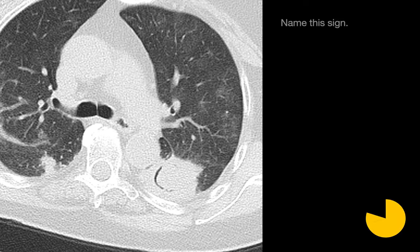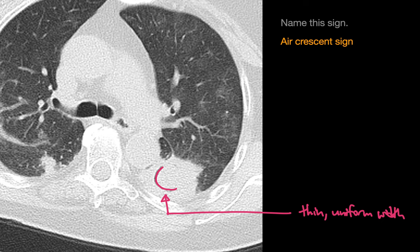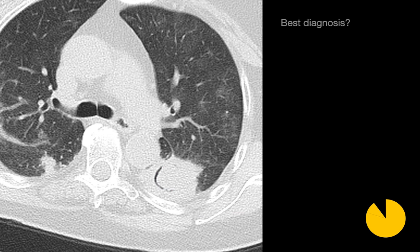Please name this sign. In this image, in the posterior left lung, we have a solid nodular mass containing a thin curvilinear uniform-width lucency. The answer here is an air crescent sign. With an air crescent sign, what's your best diagnosis?